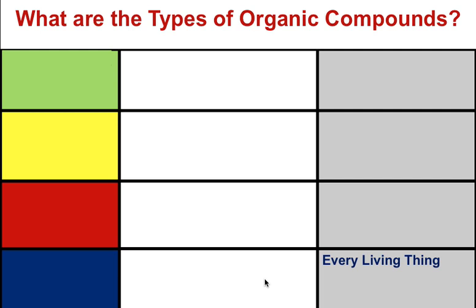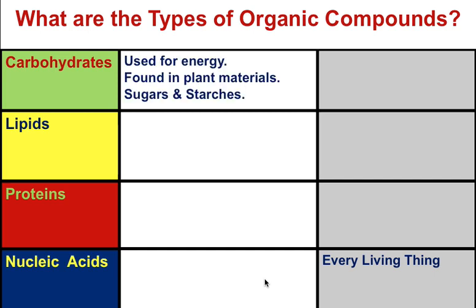There are four types of organic compounds: carbohydrates, lipids, proteins, and nucleic acids. Carbohydrates are used as energy sources for almost all organisms on the planet. They're found mostly in plants, which make carbohydrates during photosynthesis. This includes sugars, starches, breads, rice, fruit, veggies, pastas, and cereals.